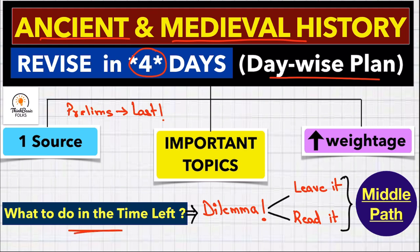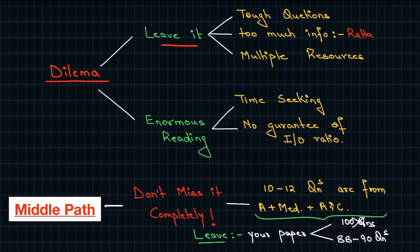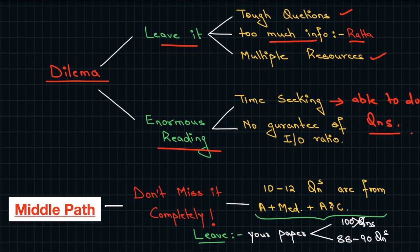When we think about this topic, there is a dilemma in our mind. First of all, do we need to leave it altogether? Because if you look at the recent questions, the level is getting tougher year by year. At the same time, there is no proper compilation and there are multiple resources available with too much information to retain. The second thought is that if we have done proper reading or revision, most students are still leaving this topic.